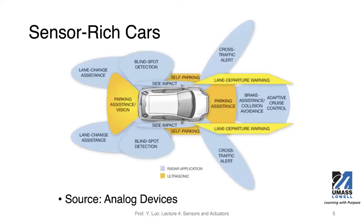For a modern car, there are a lot of sensors equipped — from parking assistance, brake assistance, traffic alert, lane departure warning, side impact, and blind spot detection. All these fancy systems on modern cars are enabled by sensors. It's important that we use these sensors to understand the physical surroundings — the distance between cars, obstacles, pedestrians. Those are what we need to understand when we design and implement these subsystems in modern cars.